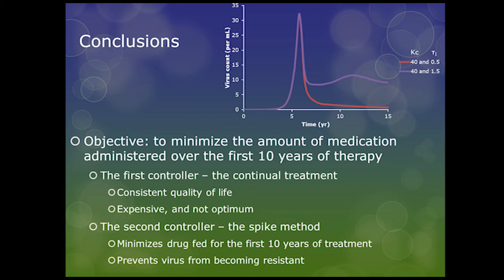The second method is more of a continual treatment to keep the virus right at 10 viruses per milliliter. Depending on what you're looking for, one approach is better than the other. The continual treatment gives more consistent quality of life, but it is more expensive because you use more drug. The spike method minimizes drug use over the first 10 years, and because you're only treating the virus once rather than continuously, that single treatment would prevent the virus from developing a resistance to the antiviral drug. So we concluded that the spike method is the optimum way to treat HIV.